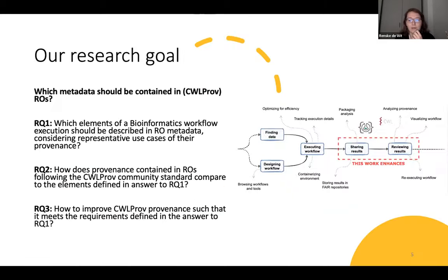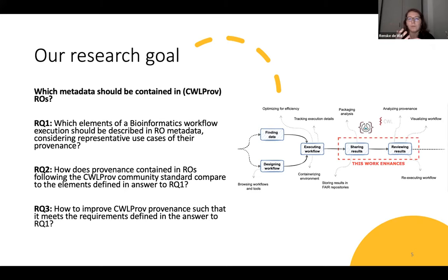What I looked at was that I first identified a set of relevant metadata for one example workflow in the field of bioinformatics. I came up with a list of provenance questions that are relevant for this workflow, and then I tried to see how easily these provenance questions could be answered from the current version of CWL-PROV. For the questions that could not be answered easily, I tried to design solutions to make it a little bit easier in the future.